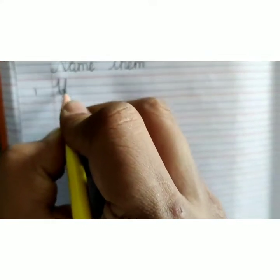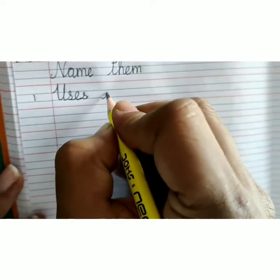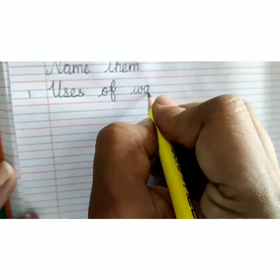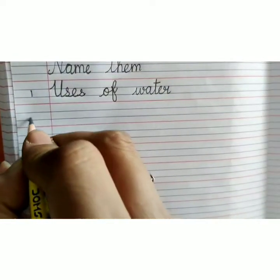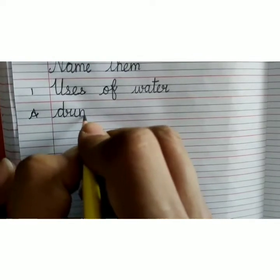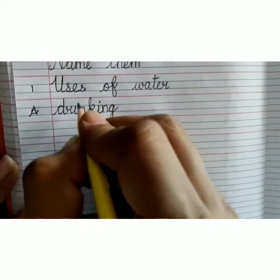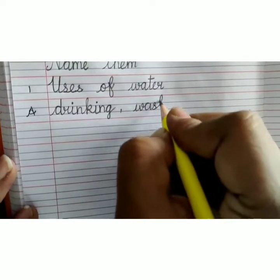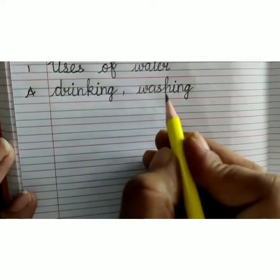Capital U-S-E, S, uses of water, W-A-T-E-R, water. Now in next line, write answer: D-R-I-N-K-I-N-G, drinking, comma, W-A-S-H-I-N-G, washing, drinking, washing.